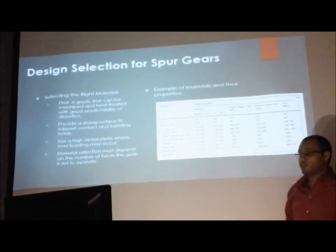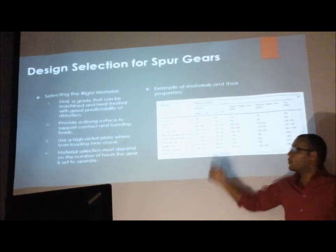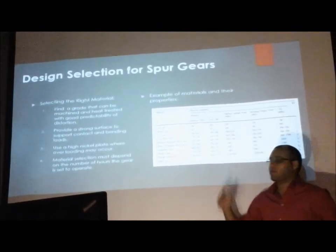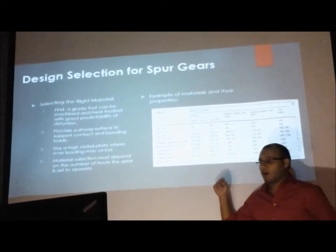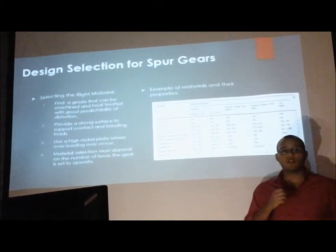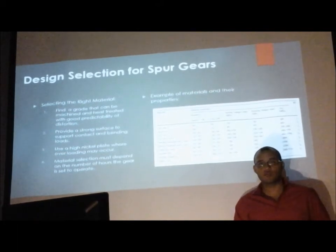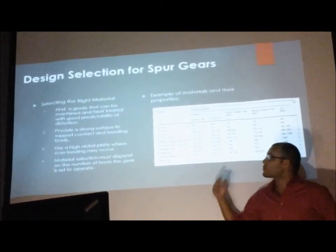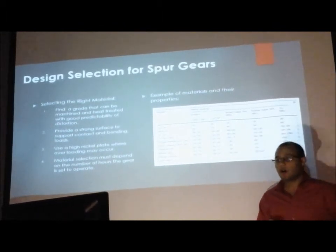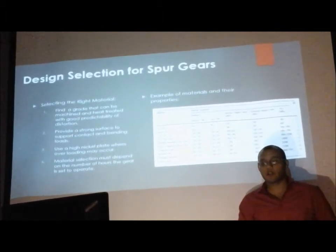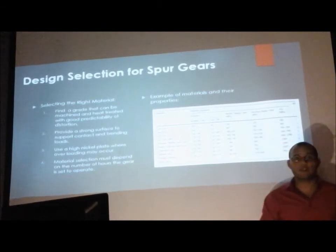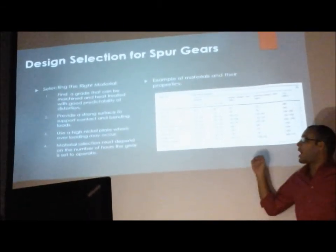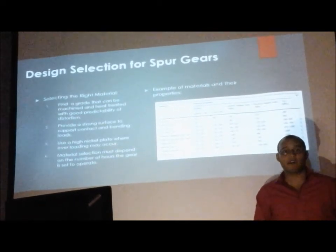Now I am going to talk about the design selection of spur gears. In order to select the right material, one must find a grade that can be machined and heat treated with good predictability of distortion. It also has to provide a strong surface to support contact and bending loads. One must also use a high nickel plate wherever overloading may occur. The most important thing is for the material selection to depend on the number of hours the gear is set to operate in its environment.